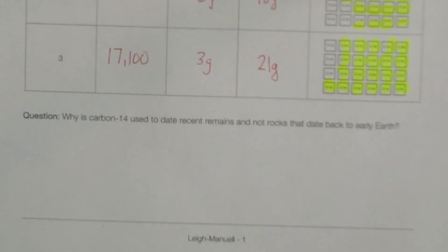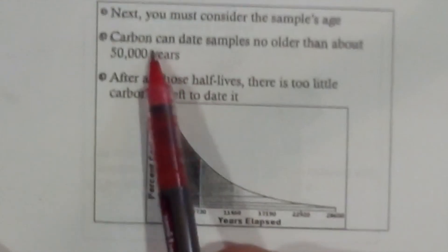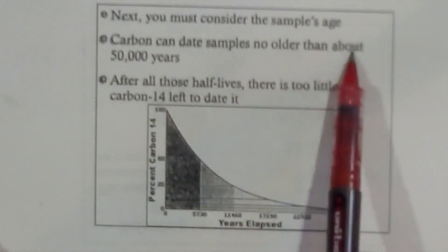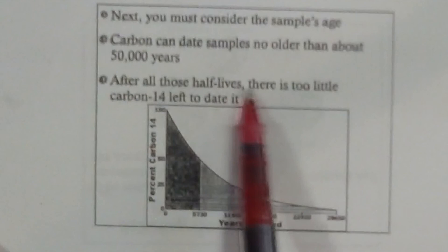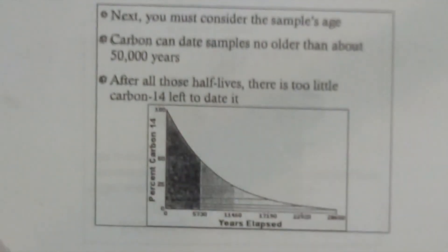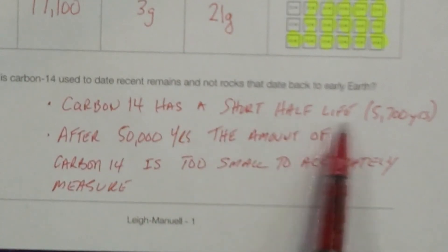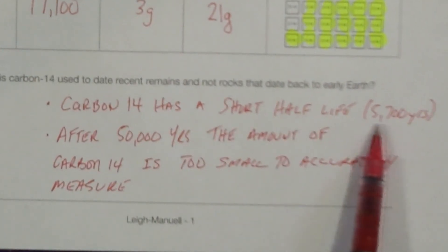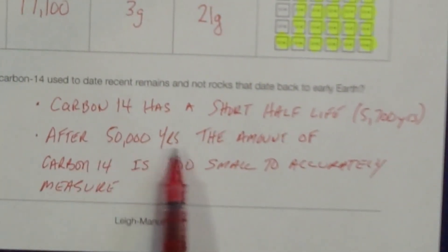Question: why is carbon-14 used to date recent remains and not rocks that date back to early Earth? As mentioned before, carbon can date samples no older than 50,000 years. After all those half-lives, there's too little carbon-14 to date it. Carbon-14 has a short half-life of 5,700 years, and after 50,000 years, the amount of carbon-14 is too small to accurately measure.